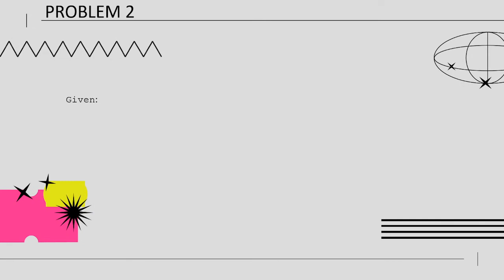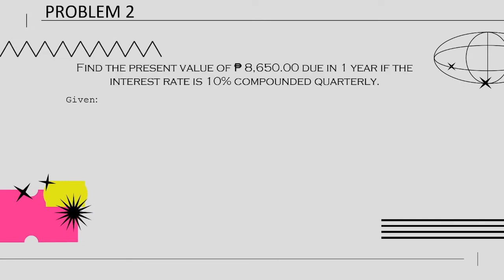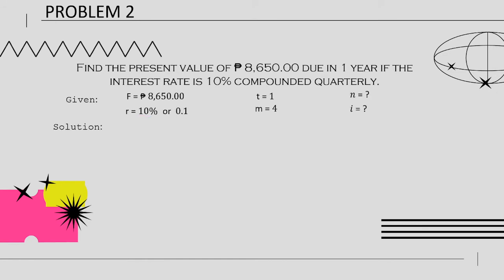Another example: Find the present value of P8,650 due in one year if the interest rate is 10% compounded quarterly. We have the given: maturity value P8,650, interest rate 10%, time 1 year, and conversion period 4. Divide 10 by 100 to convert 10% into a decimal, which equals 0.1. The total number of conversion periods is 1 times 4 equals 4. For the periodic rate, divide 0.1 by 4, which equals 0.025.